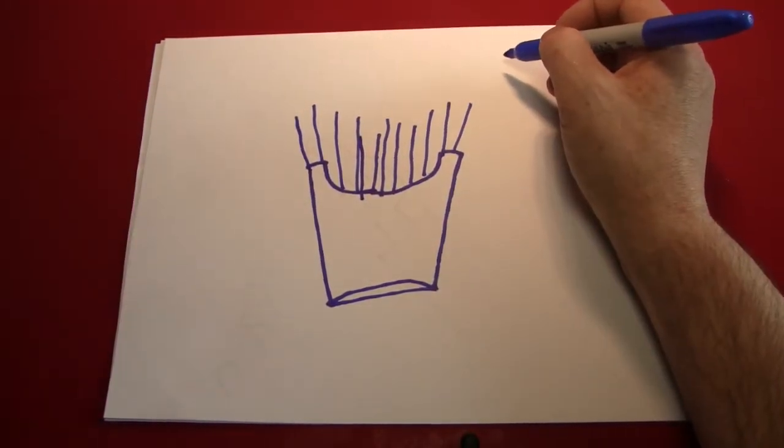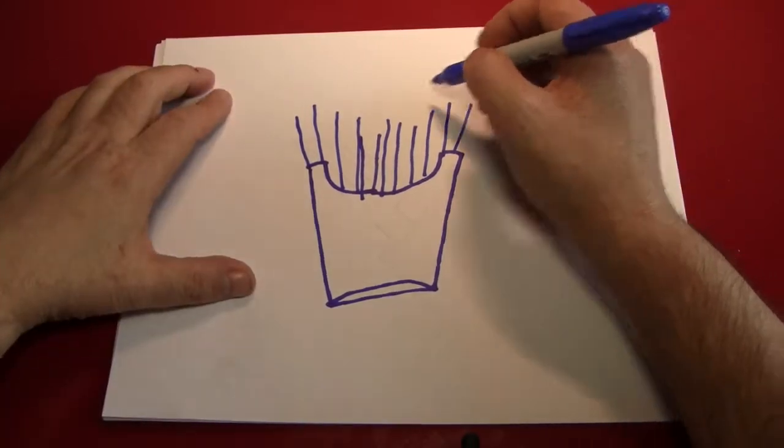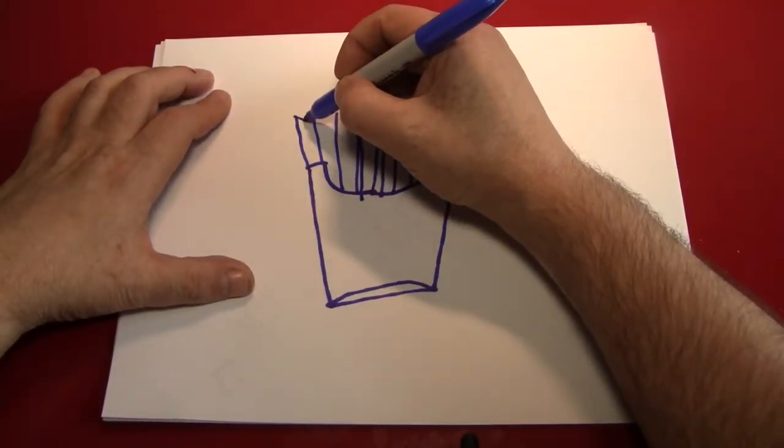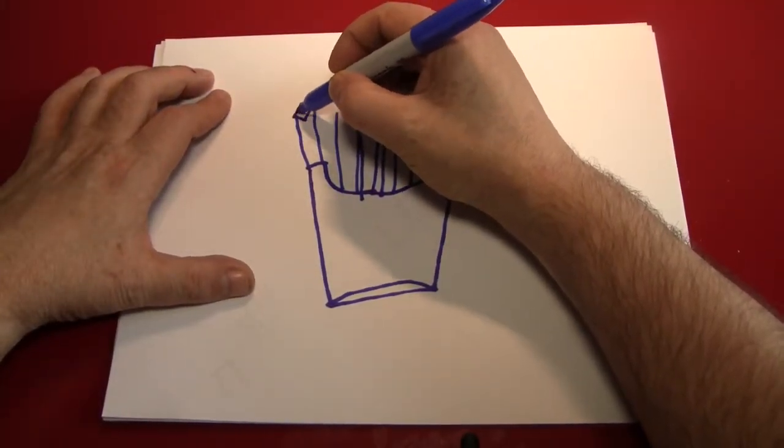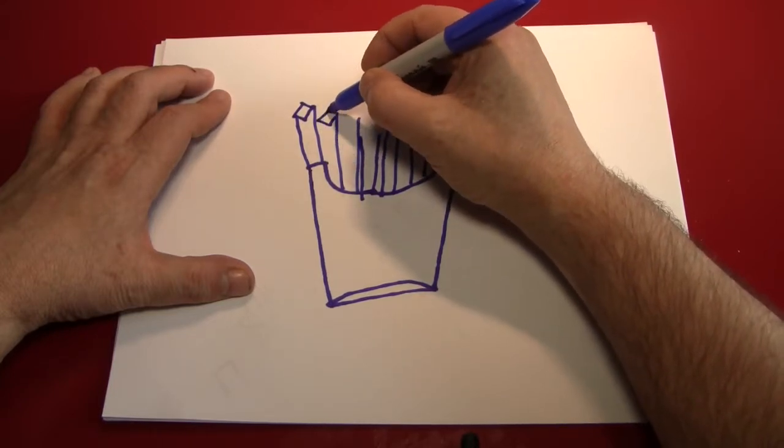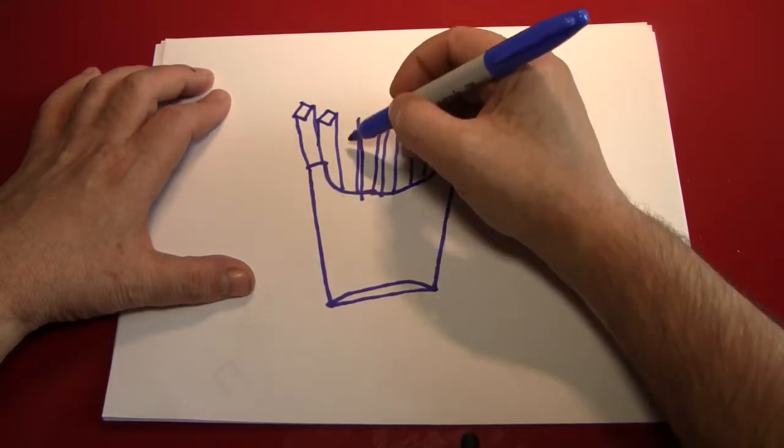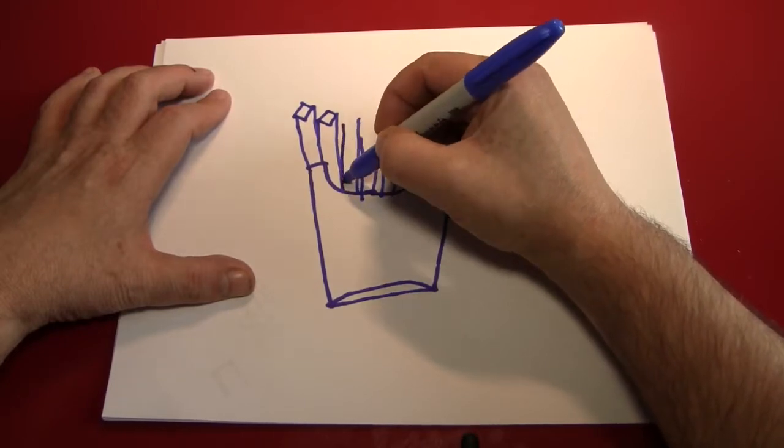Then all you have to do is put tops on the French fries. Like that. Little squares or diamonds, if you will. Maybe you're making trapezoids. I don't know how fancy you are.